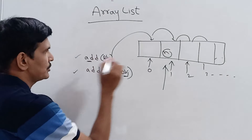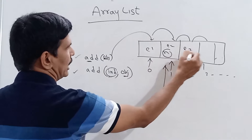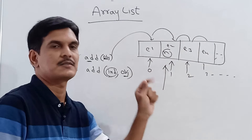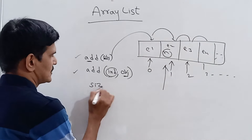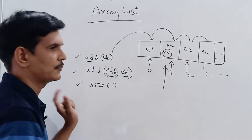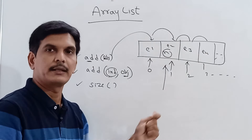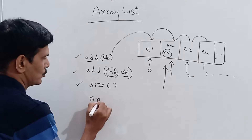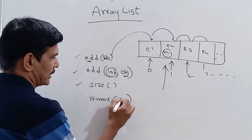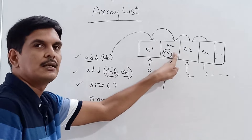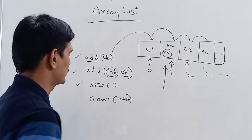The size() method returns how many objects or elements are stored in the ArrayList. The remove() method removes an element — you pass an index, and whichever element is present at that index or location will be removed.